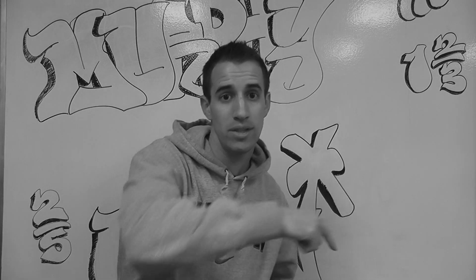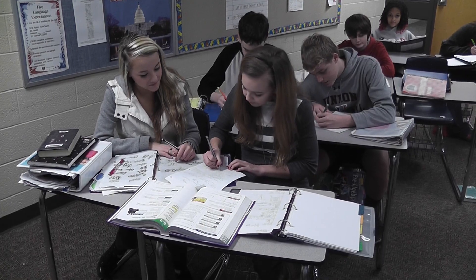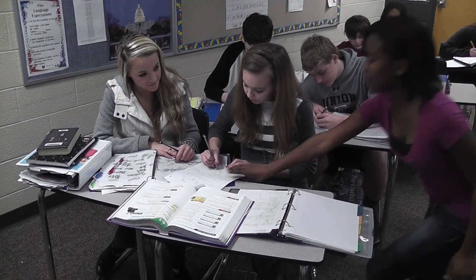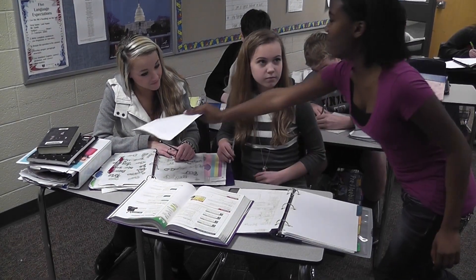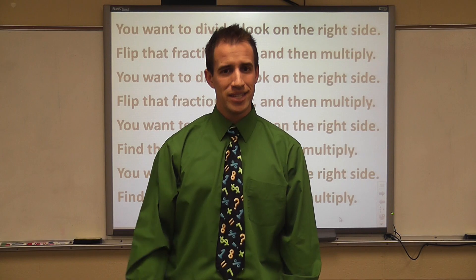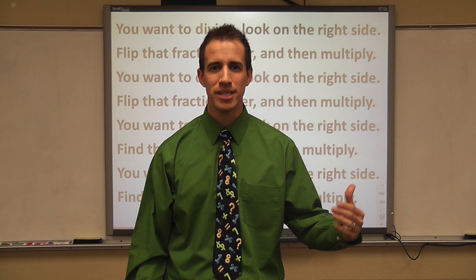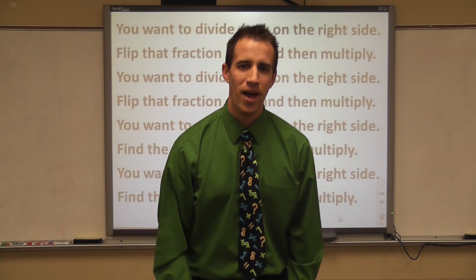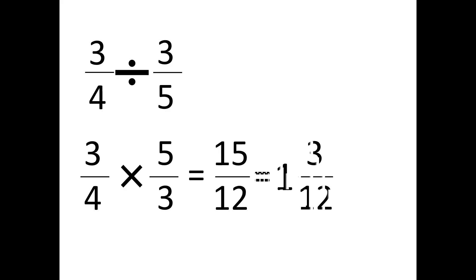Multiply across, just like Murph told ya, do it on your own, don't let your friend do it bro ya. Three times five then four times three — fifteen over twelve, that's improper you see. Simplify it down: one and three twelfths is one and one fourths.